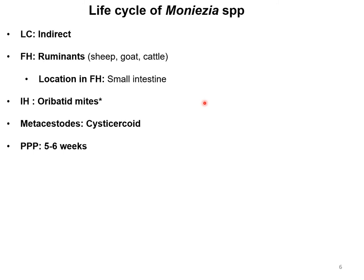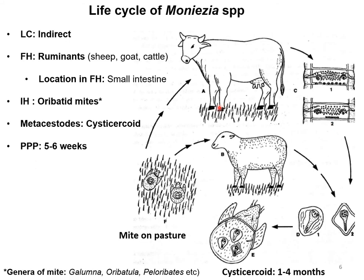When describing the life cycle of Moniezia species, you should first state the type of life cycle — whether direct or indirect — then mention the final and intermediate hosts, the infective stage, and the time required for completion. The life cycle of Moniezia is indirect, meaning another host — an intermediate host — is required for completion.